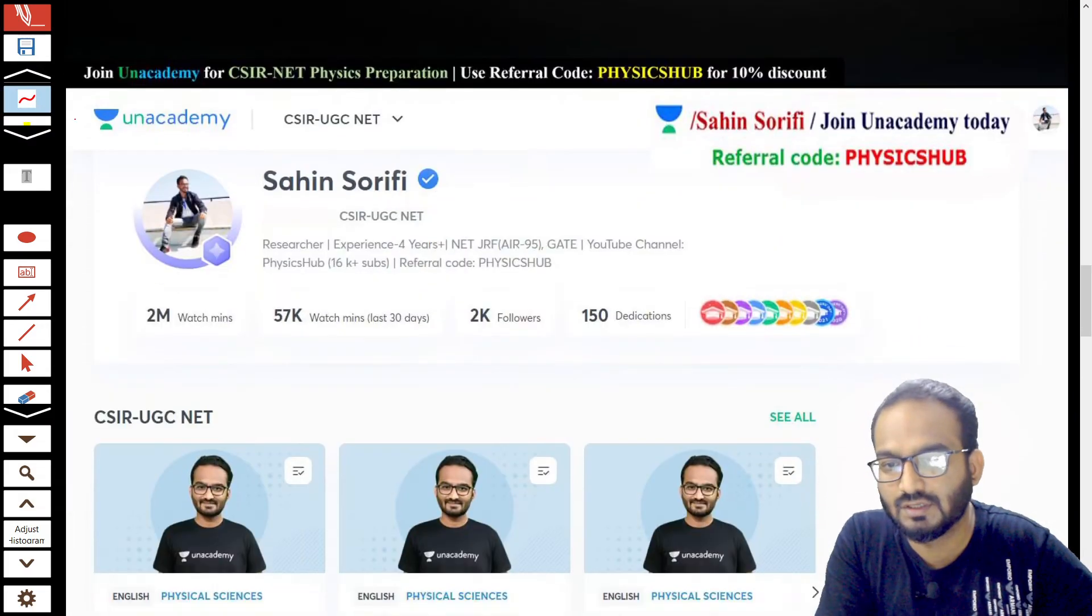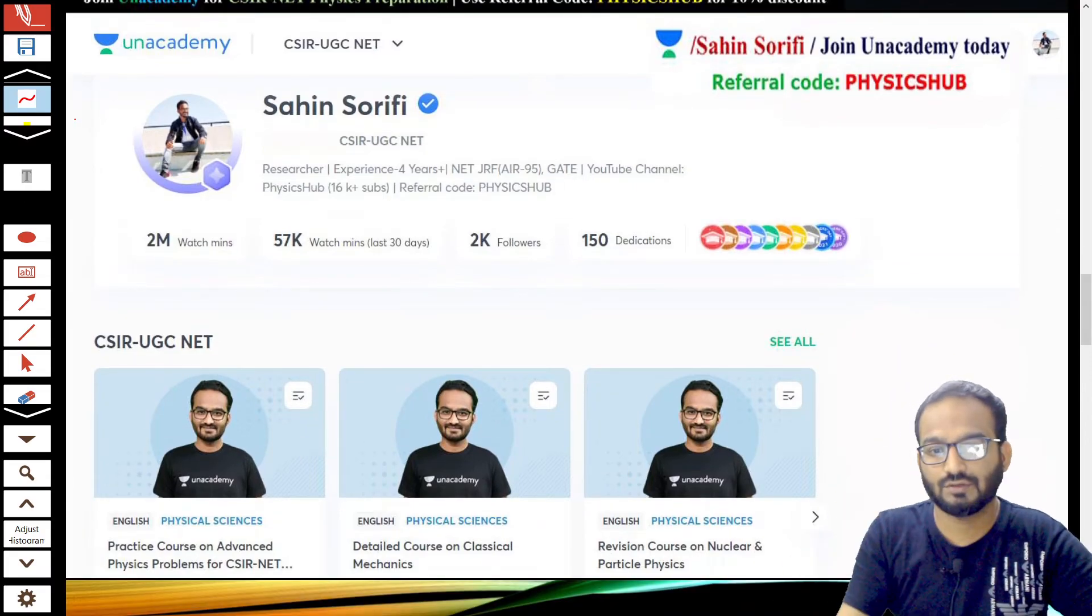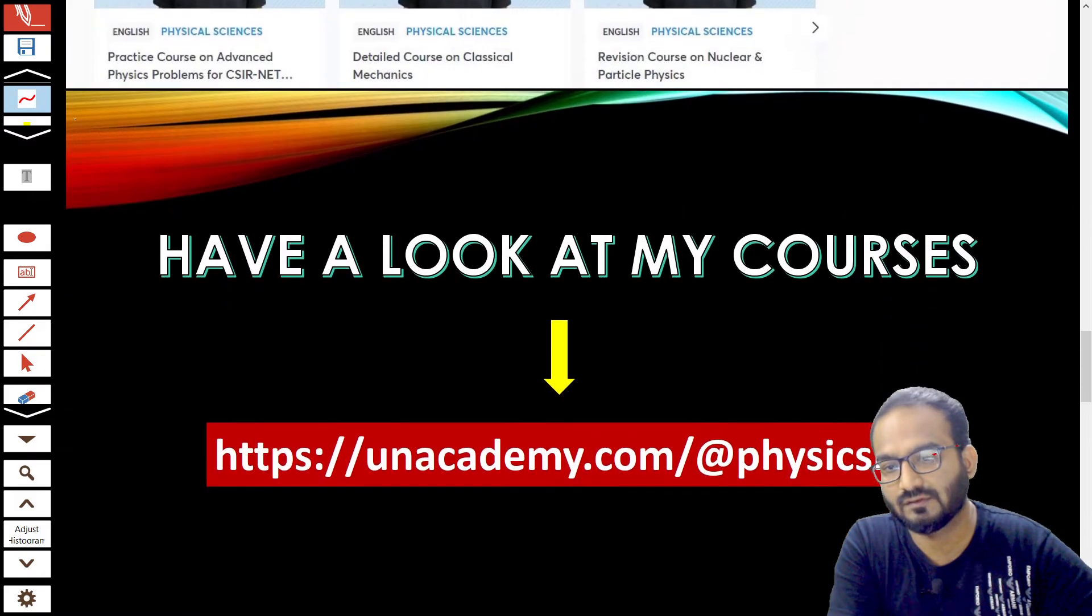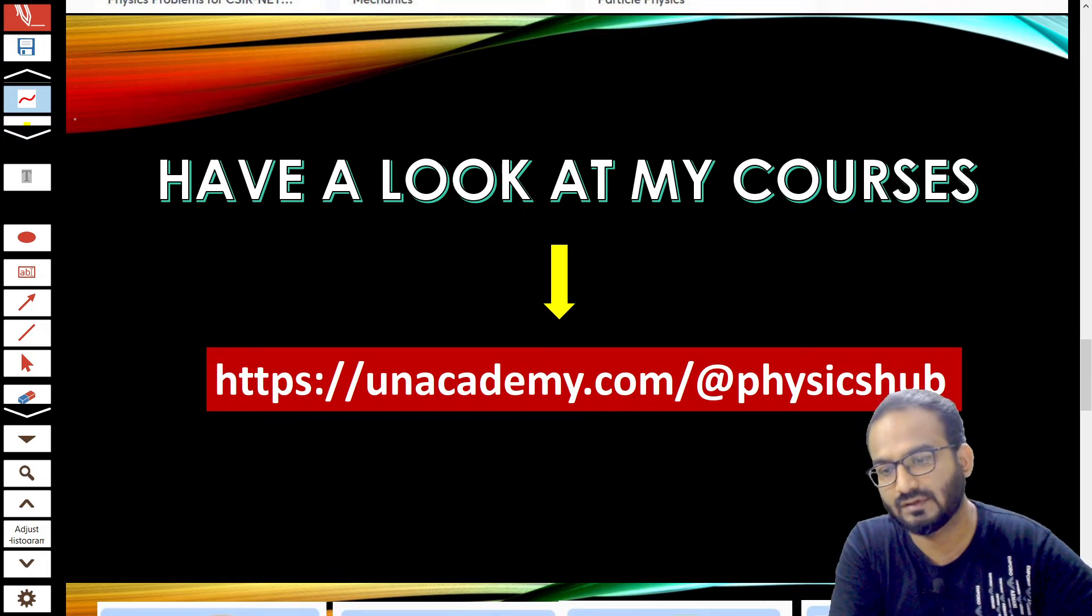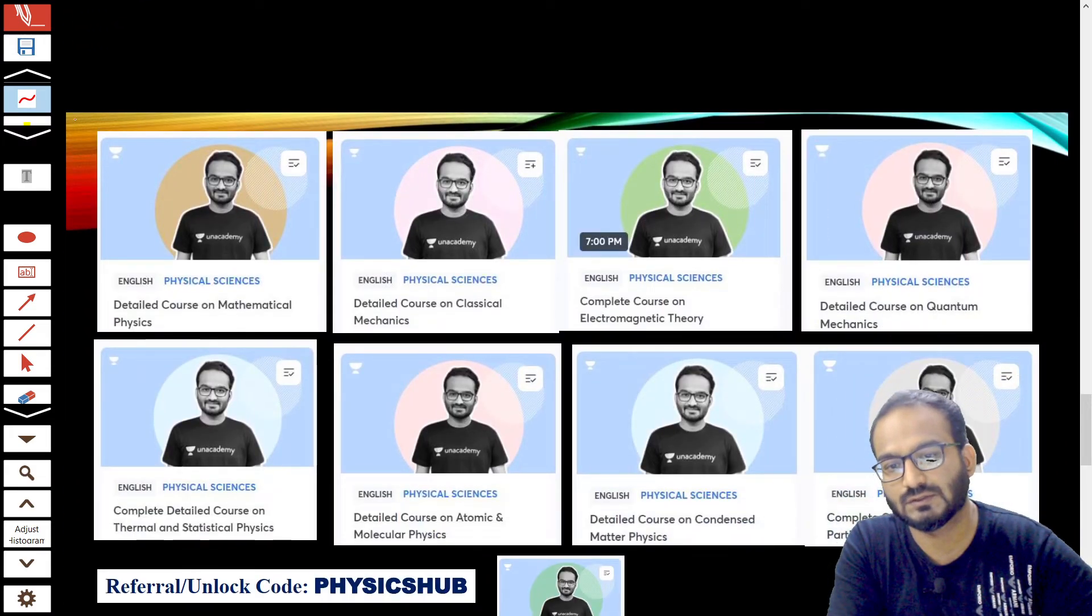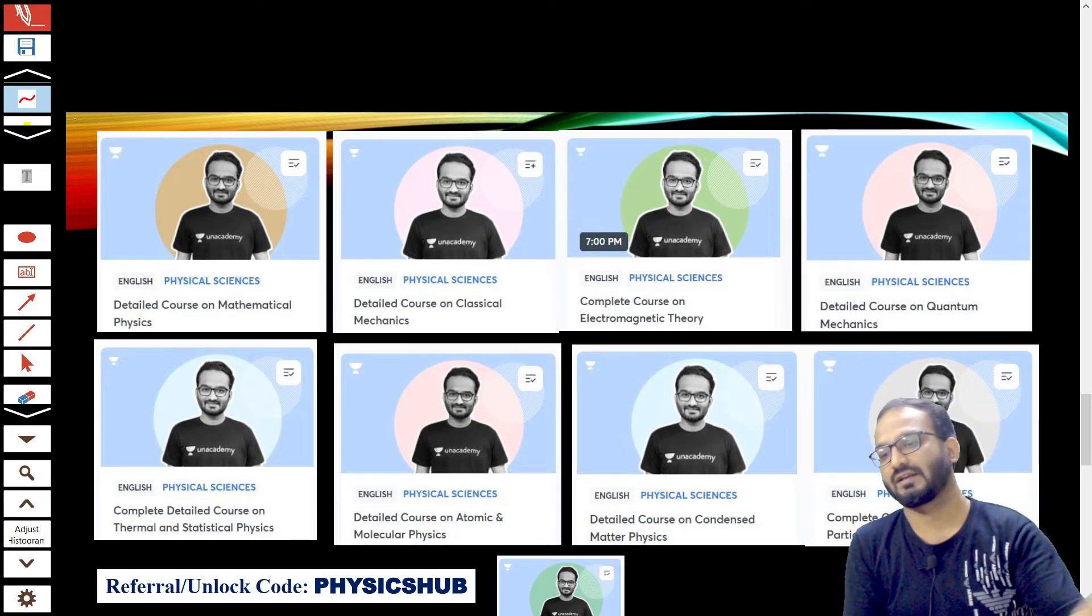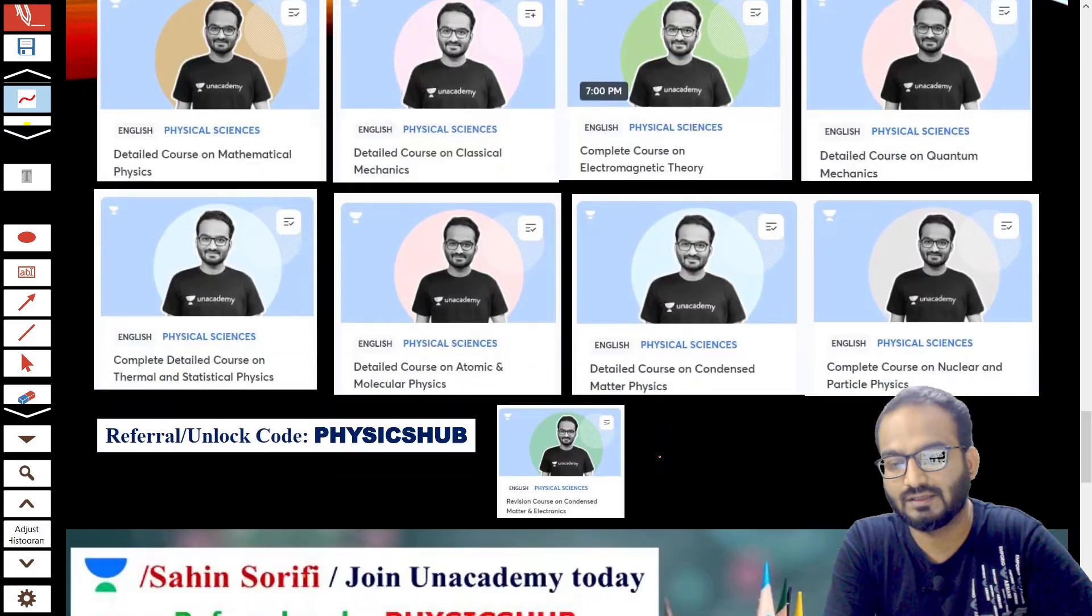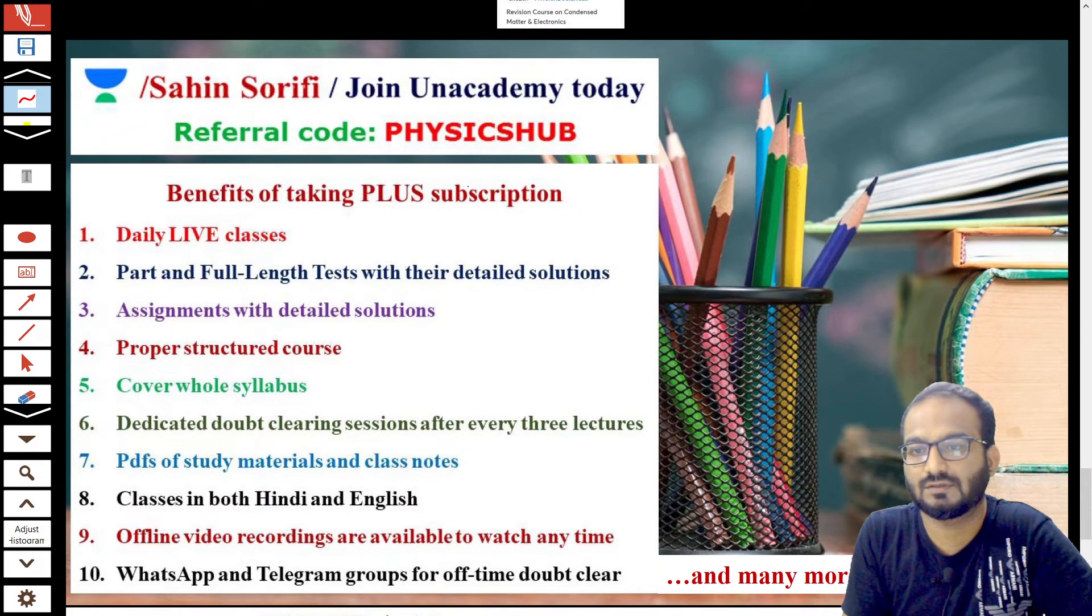Before I end the video, you can follow me on Unacademy. You can join my Plus classes. Have a look at my courses at unacademy.com/physicshub, where you can get all these detailed courses like Mathematical Physics, Classical Mechanics, Electromagnetic Theory, Quantum Mechanics—you can see on this slide. You can take the Unacademy Plus subscription using our referral code PHYSICSHUB.